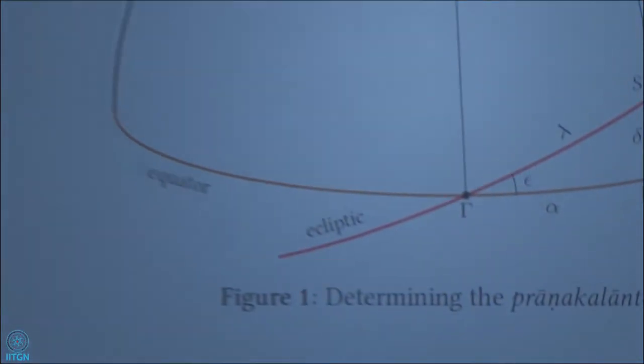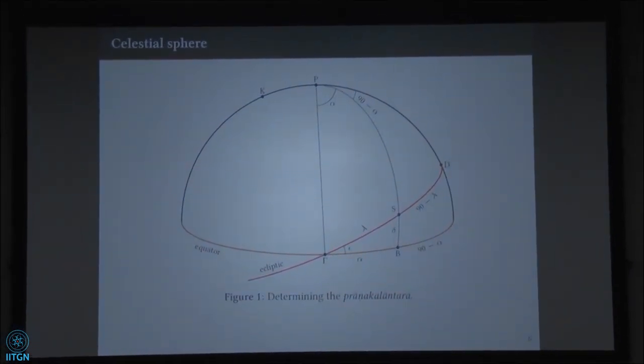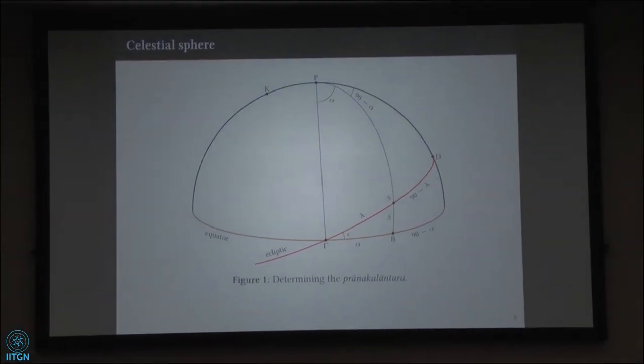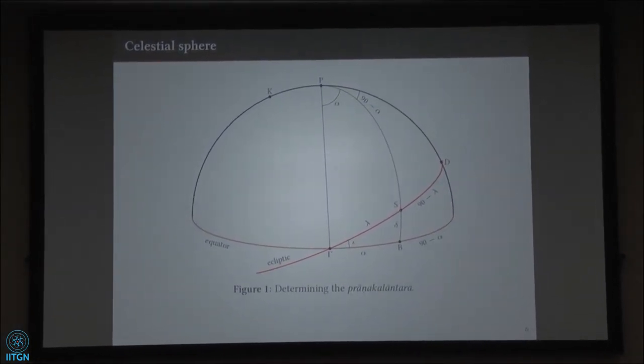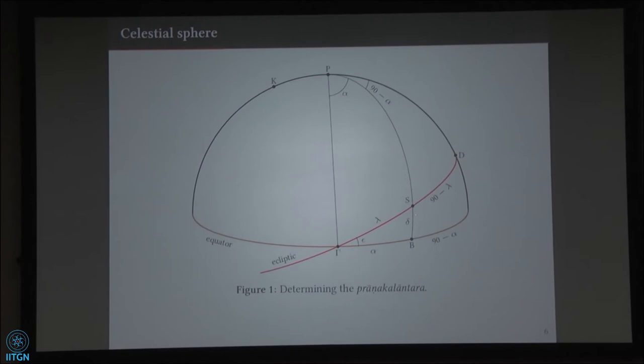You can express Pranakalantra as lambda plus or minus Pranakalantra, which is plus or minus mod(lambda minus alpha). Now consider the celestial sphere. Here we have the equator, the red line is the ecliptic, P is the pole of the equator, and K is the pole of the ecliptic. If you consider a point S on the ecliptic, gamma S will be the longitude of the point and gamma B will be the right ascension, and S B will be the declination.